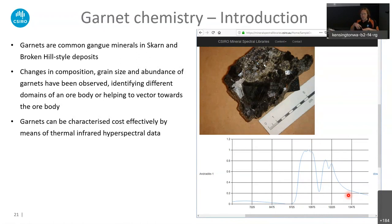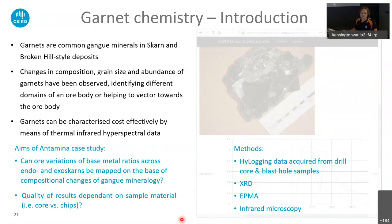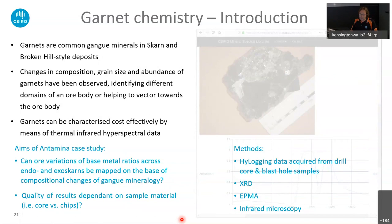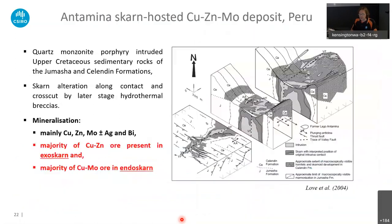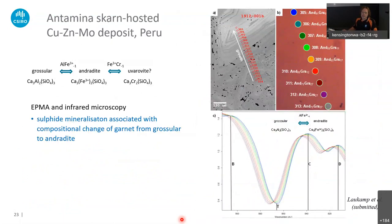We'll have a closer look at the Antamina skarn deposit in Peru, where we wanted to see if we can use garnets to map different parts of the ore body — to distinguish endoskarn and exoskarn based on compositional changes of the garnets. We used HiLogger data for that, but also compared with XRD, infrared microscopy, and microprobe data. At Antamina — a copper-zinc molybdenum deposit in Peru — we looked closely at garnet samples and did profiles with the microprobe and infrared microscope.